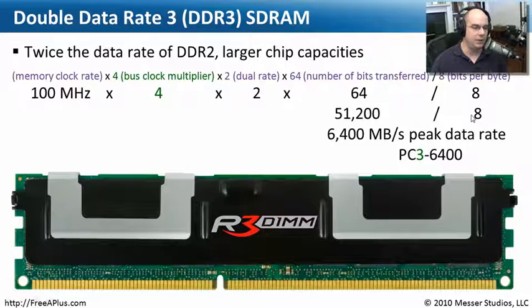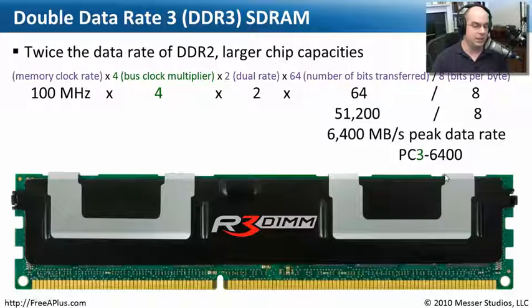So if I calculate it out, it's 51,200 divided by 8, which means my peak data rate for this DDR3 is 6,400 megabytes per second. I would see it described on the package as a PC3-6400.